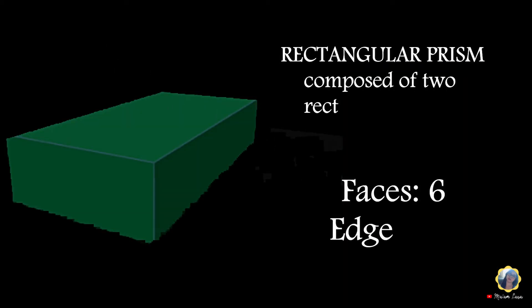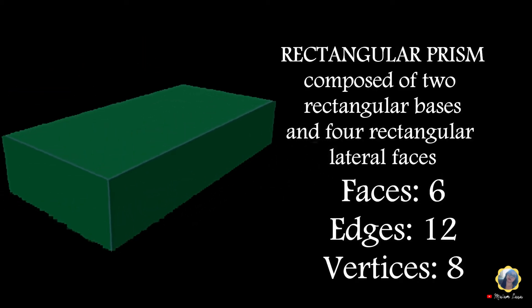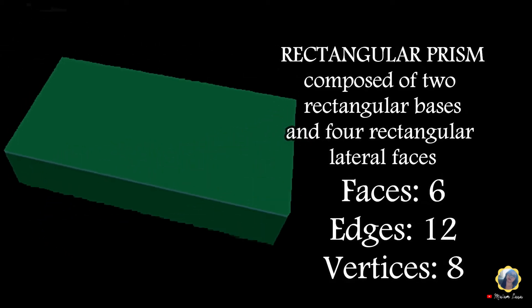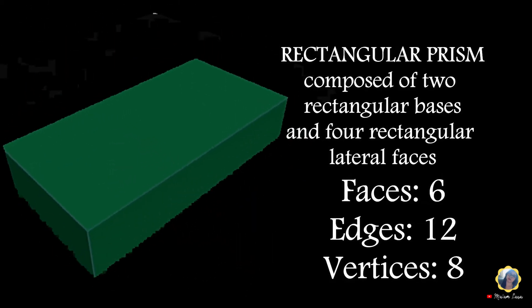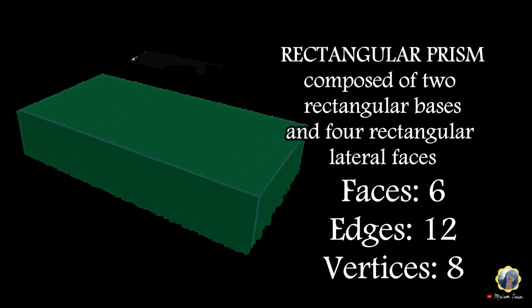Rectangular prism: composed of two rectangular bases and four rectangular lateral faces. Faces: 6. Edges: 12. Vertices: 8.